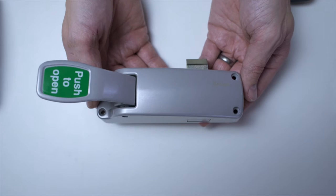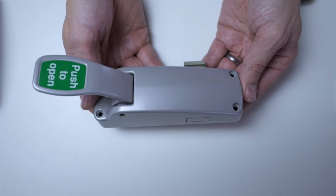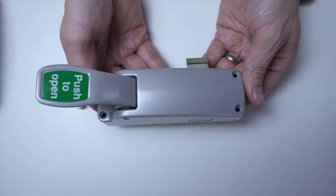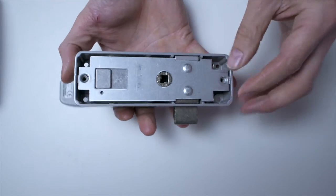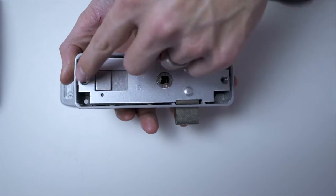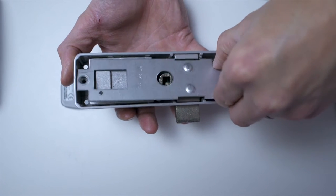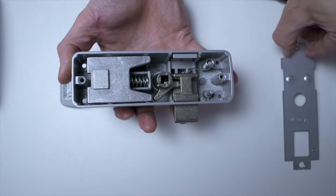So here we have a Briton latch and I'll show you how to reverse the latch bolt on these Briton push pads. I've already removed the two fixing screws on the back cover plate, so we remove the back plate.